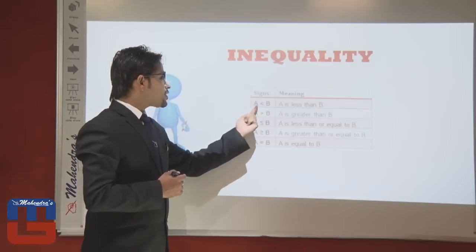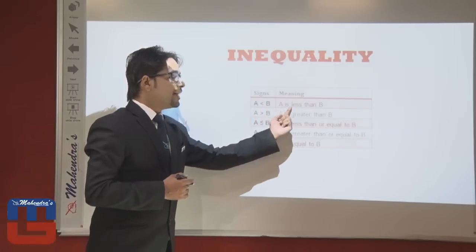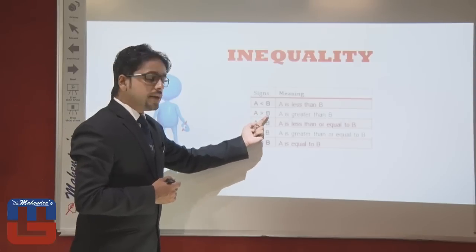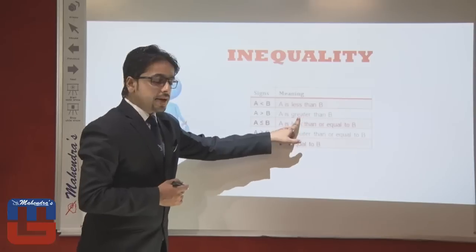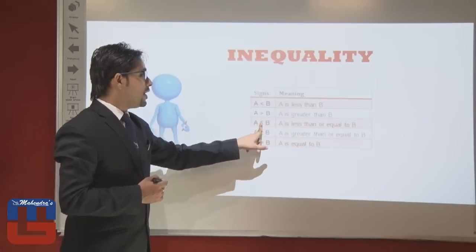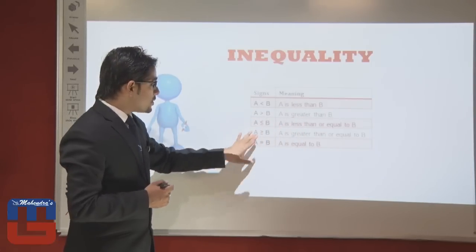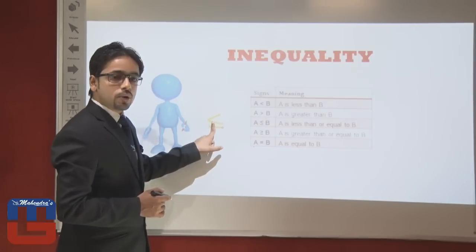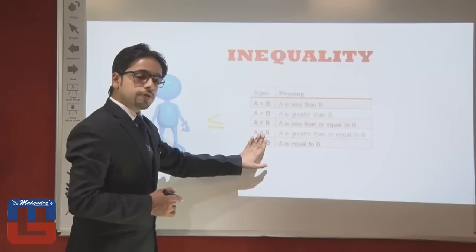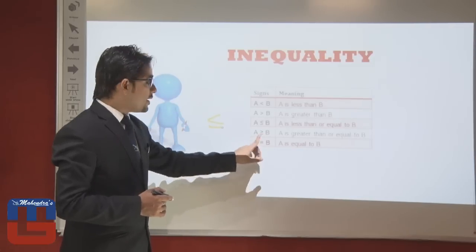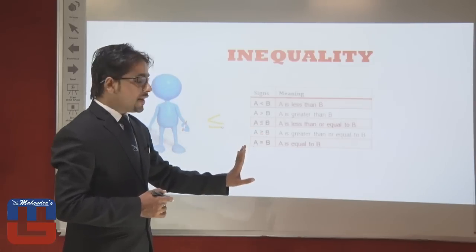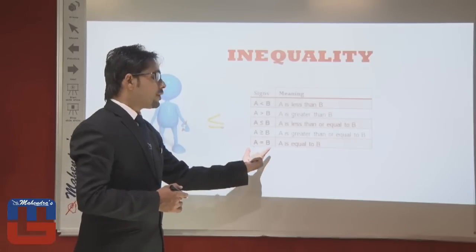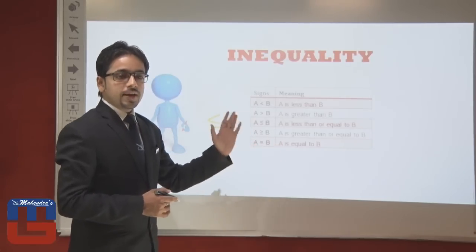Let's look at the basic symbols of inequality. The symbol A < B is the less than symbol. A > B is the greater than symbol. A ≤ B means either less than or equal is true. A ≥ B means either greater than or equal is true. Finally, A = B means both are equal.